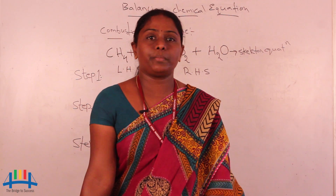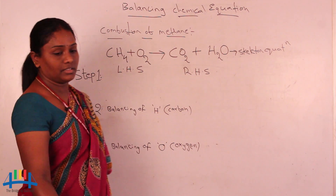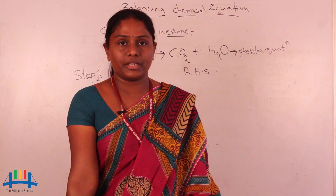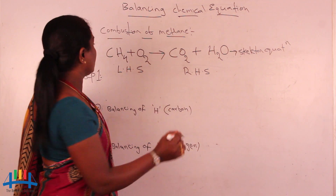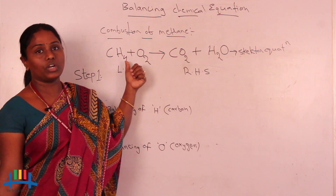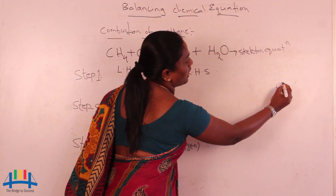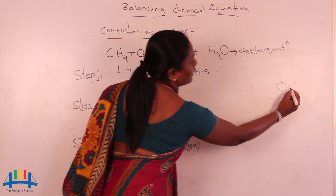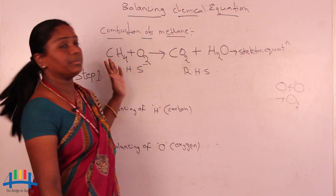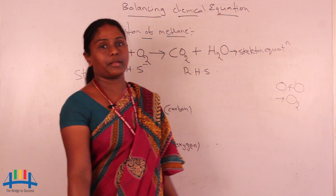Let us continue the topic of balancing chemical equations. Here I have taken the example of combustion of methane. Before going to balance a chemical equation, you have to learn the first 20 elements, their atomic numbers, and element names. The methane formula — carbon plus 4 hydrogens together gives methane. The symbol of oxygen is O and the molecular formula is O2.